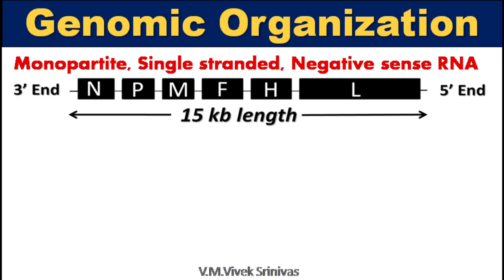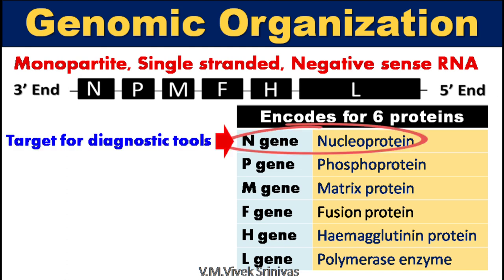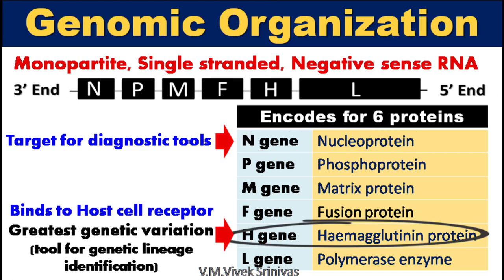The genome length is 15 kilobase pairs. The viral genome encodes six proteins: nucleoprotein, phosphoprotein, matrix protein, fusion protein, hemagglutinin protein, and polymerase enzyme. Diagnostic tests mainly target the nucleoprotein, that is the N-gene, for identifying the viral antigen. The hemagglutinin protein is the immunodominant protein which plays a major role in antigenicity and binds to the host cell receptor. The H-gene site has the greatest genetic diversity, so it is used as a tool for CDV genetic lineage identification.